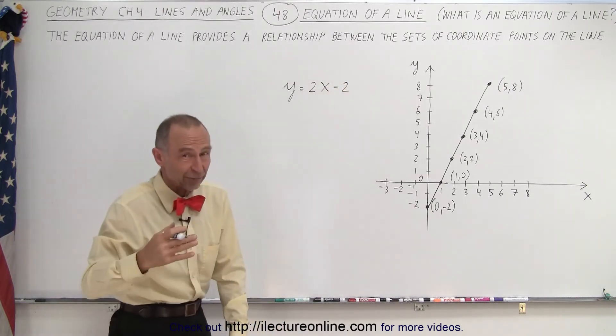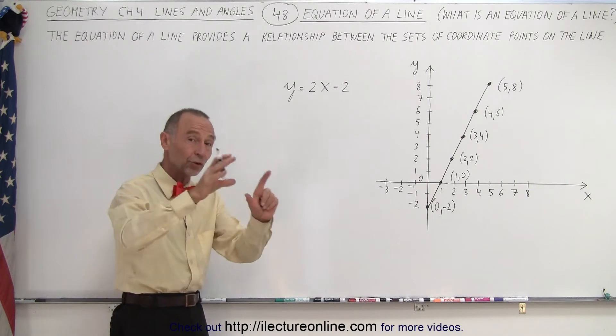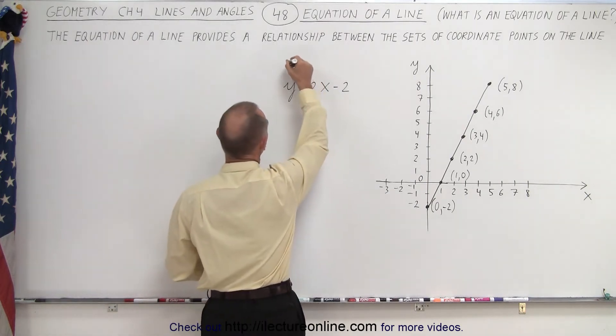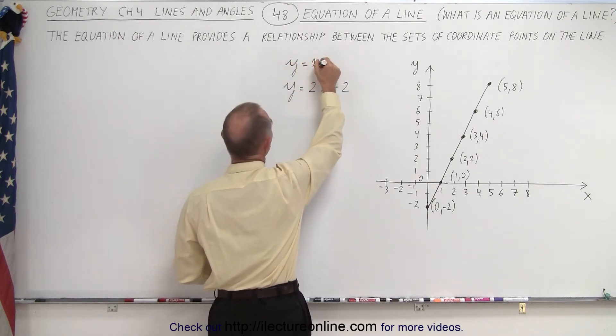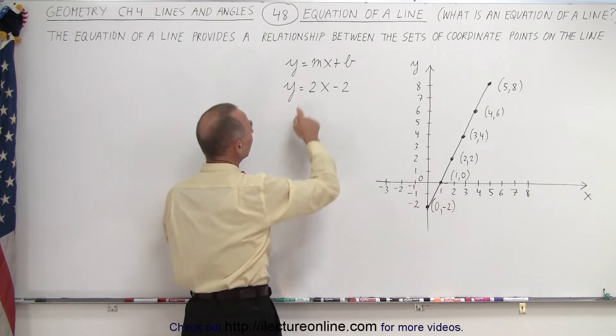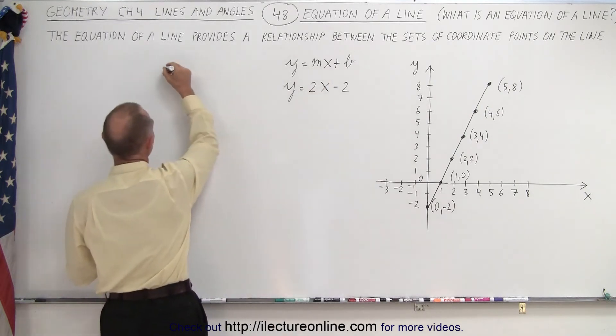Now you may wonder how did I figure that out? Well, be patient. We'll show you that in some of the next videos. First of all, it has a general format of y equals mx plus b. Now the m stands for the slope. So let's write that down. So m equals the slope of the line.